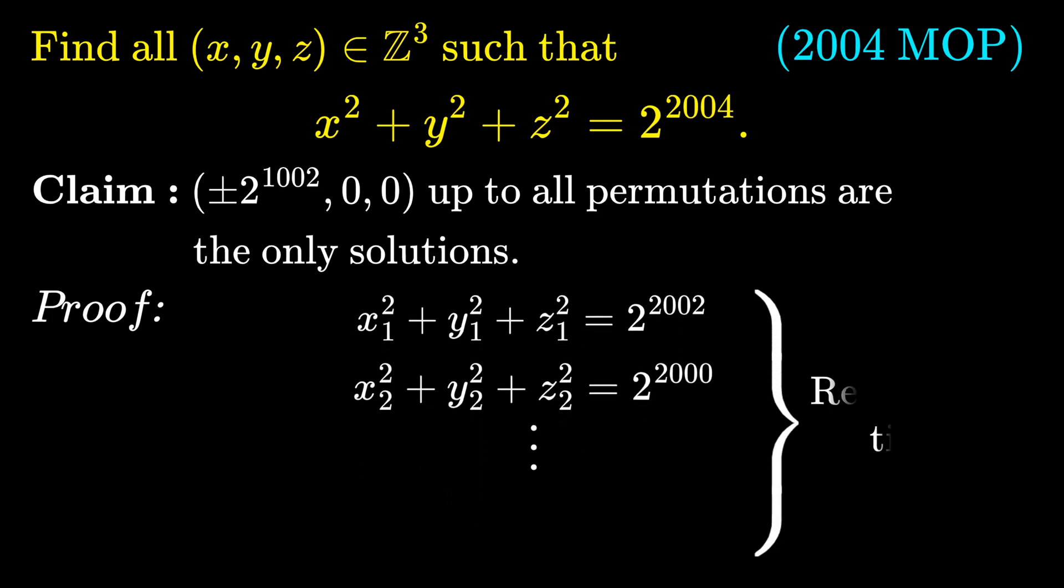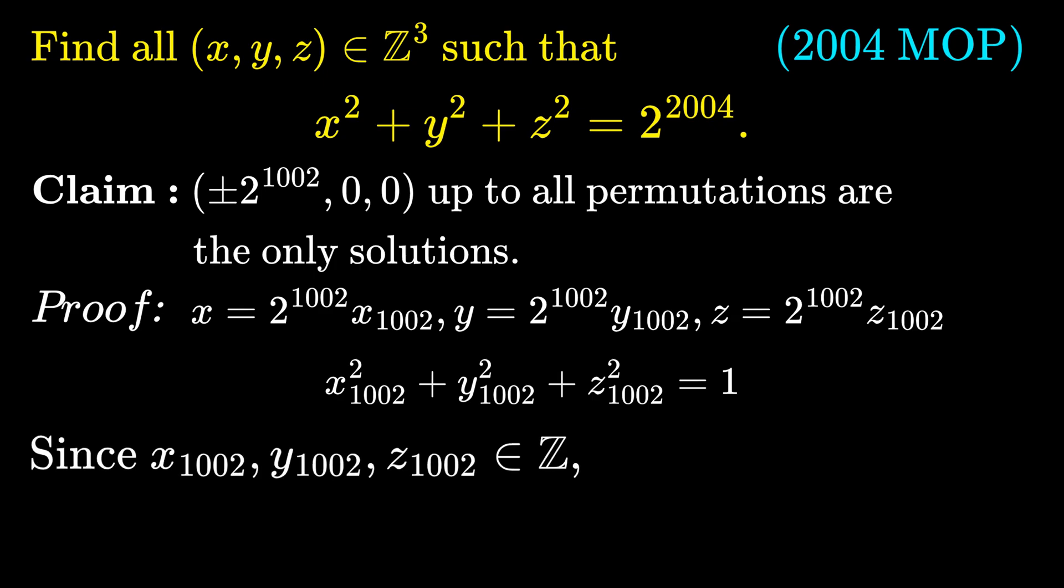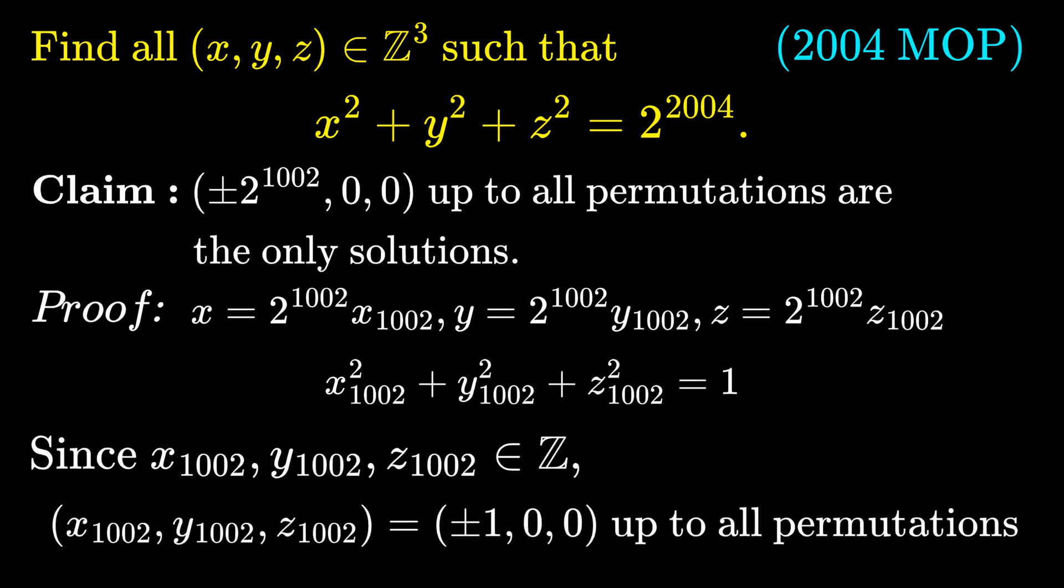If you repeat this process 1002 times, you will end up with this following equation involving x sub 1002, y sub 1002, z sub 1002, which we can see that since these three integers add up to 1, they can only be plus or minus 1, 0, 0, up to all permutations.